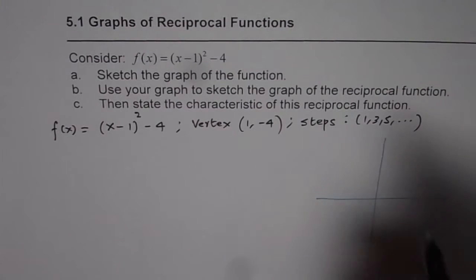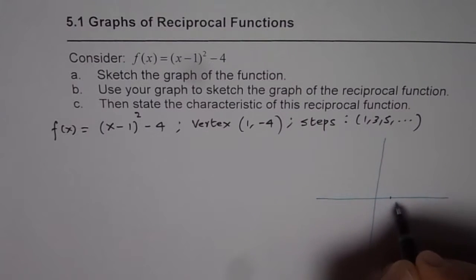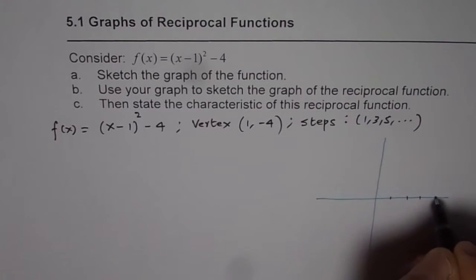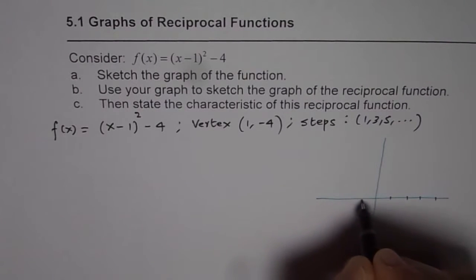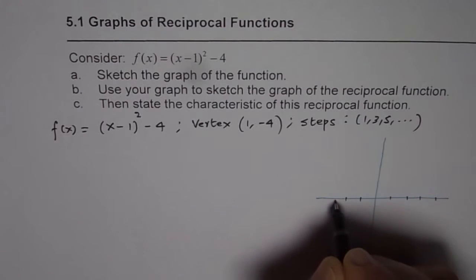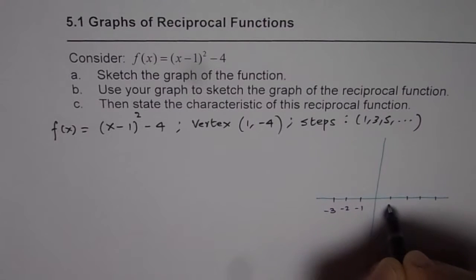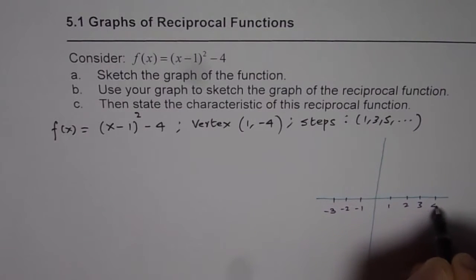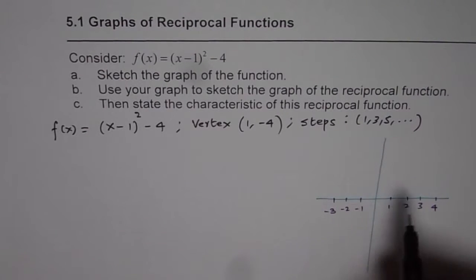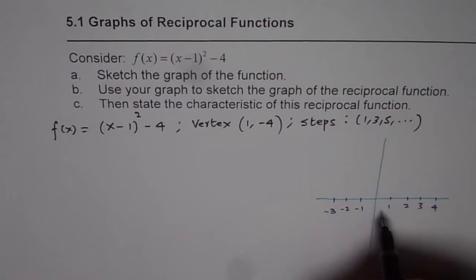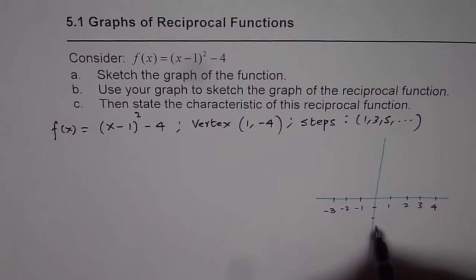With this information let's sketch the parabola first. Let me make a rough sketch. This is 1, 2, 3, 4 on the right side and on the left side minus 1, minus 2, minus 3. Now the vertex is at minus 4, the y value. So (1, -4) gives us the vertex for the parabola.